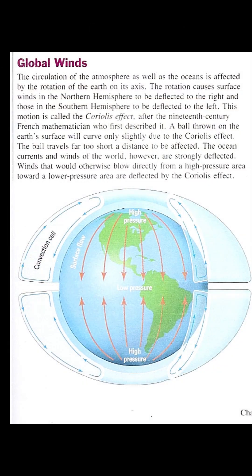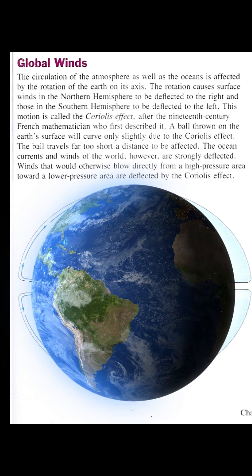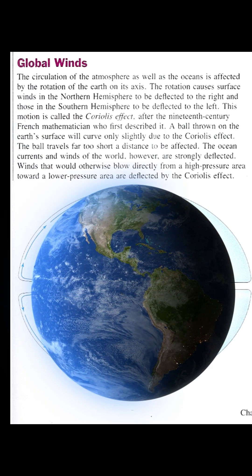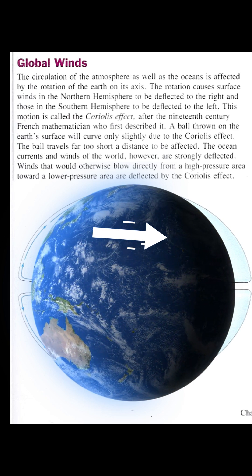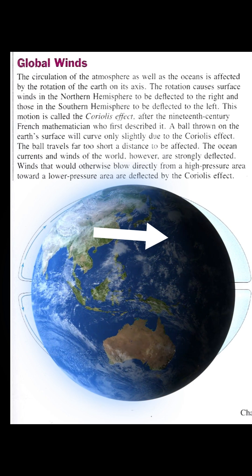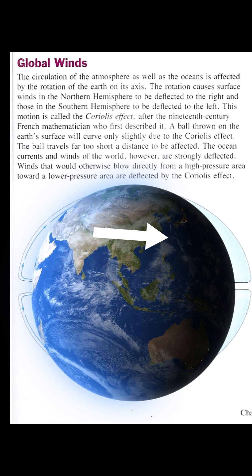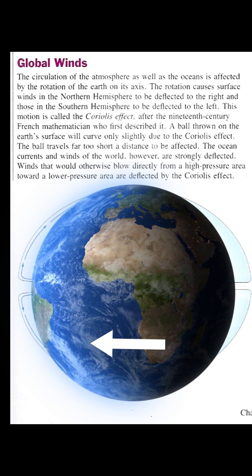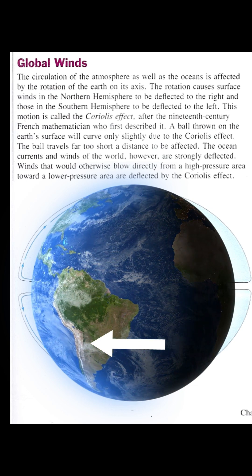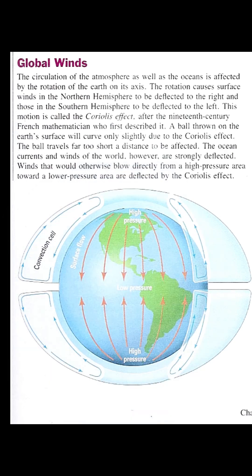Global Winds. The circulation of the atmosphere, as well as the oceans, is affected by the rotation of the earth on its axis. The rotation causes surface winds in the northern hemisphere to be deflected to the right, and those in the southern hemisphere to be deflected to the left. This motion is called the Coriolis effect, after the 19th century French mathematician who first described it.